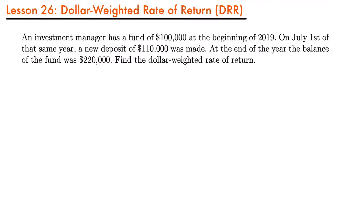This is also slightly different than when we calculated the internal rate of return, because the internal rate of return could be calculated for a time period greater than one year. But typically, when you're calculating the dollar-weighted rate of return, you are only going to be looking at one year and what is taking place in that fund or account for that year. Let's set up a timeline for this scenario, which will help us determine how to set up our equation of value to solve for the dollar-weighted rate of return.